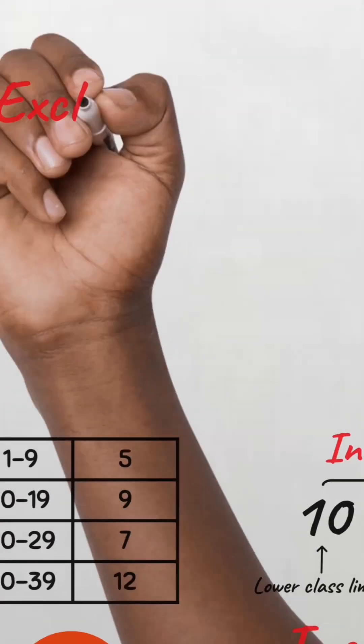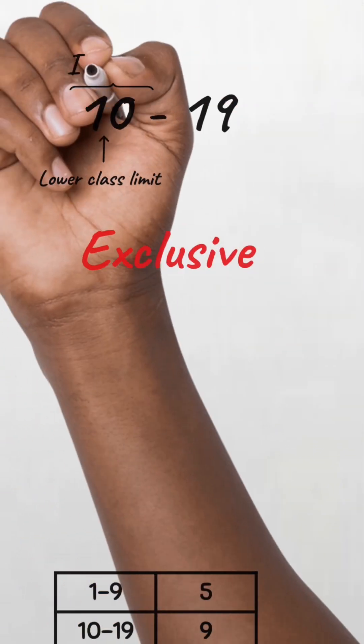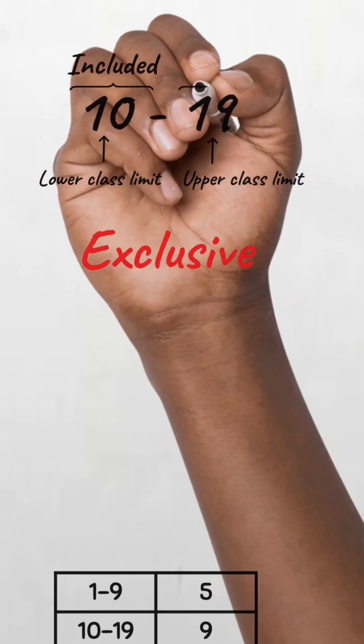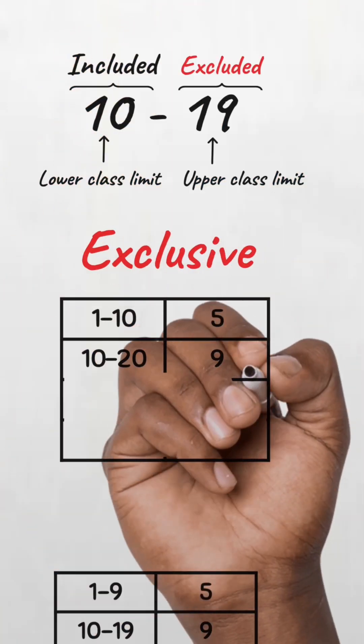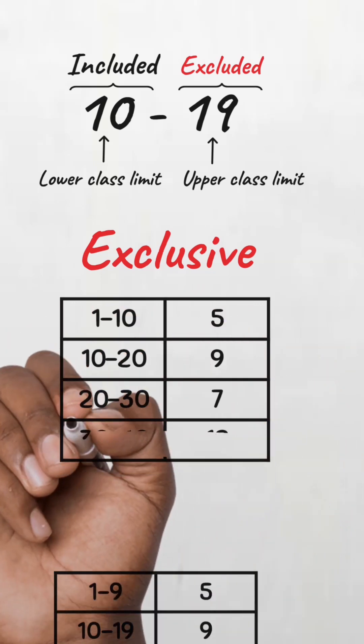In the exclusive type of classification, the lower limit of each class is included but the upper limit is excluded. For example, if we construct a class interval of 1 to 10, 10 to 20, and so on,